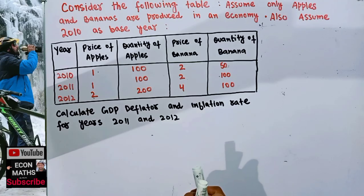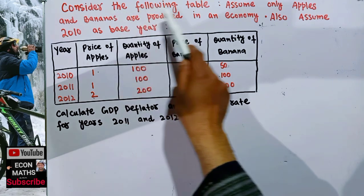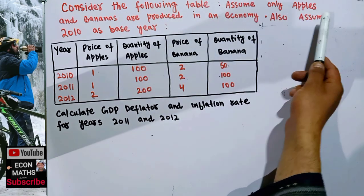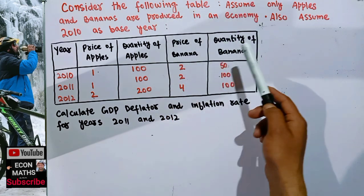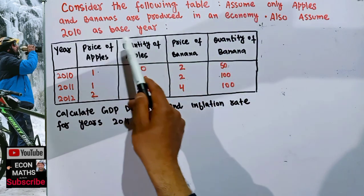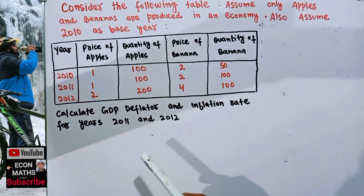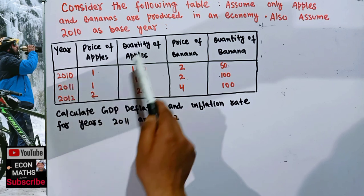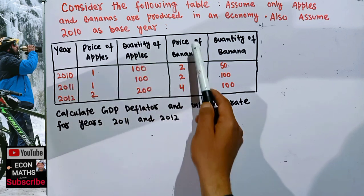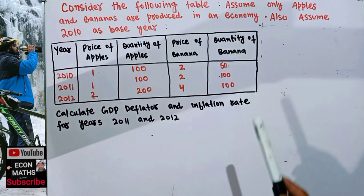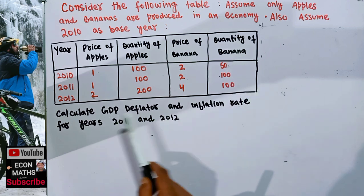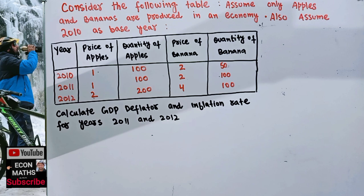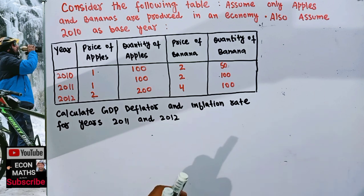Let us learn how to calculate GDP deflator and inflation rate from the given data. The question is: consider the following table. We assume only apples and bananas are produced in an economy, and that 2010 is the base year. We are given the price and quantity of apples and bananas in different years, and we need to calculate the GDP deflator and inflation rate.